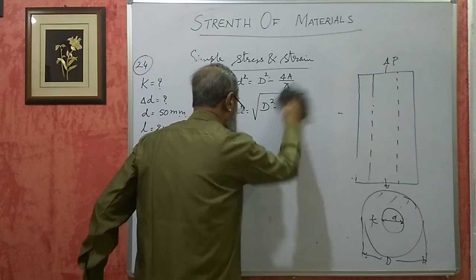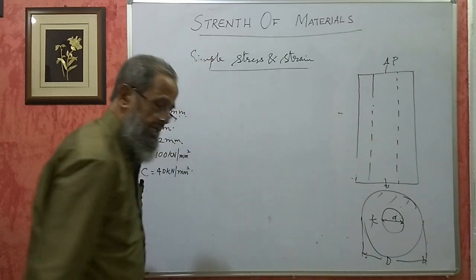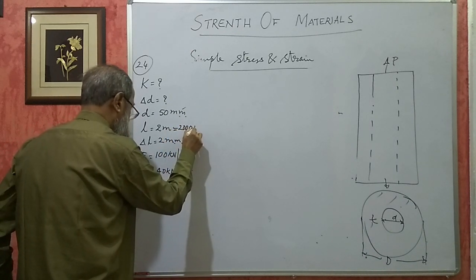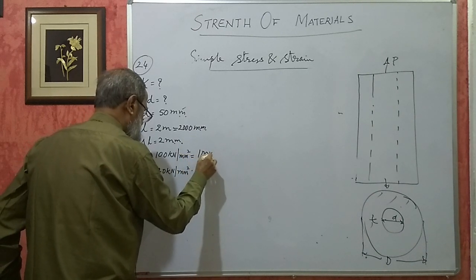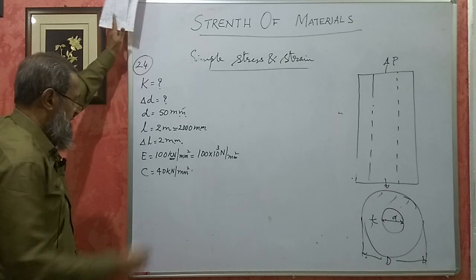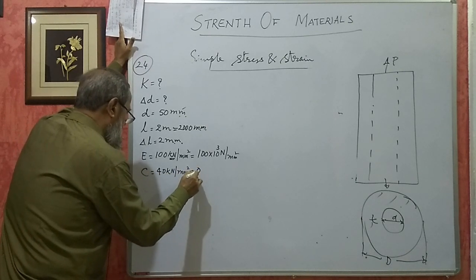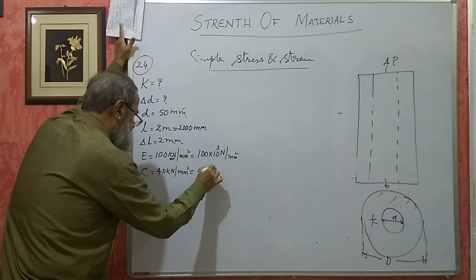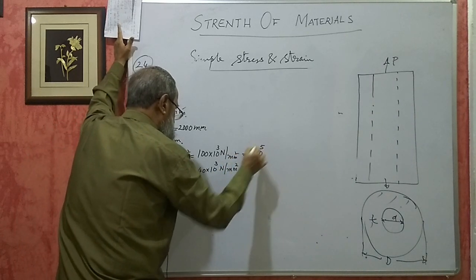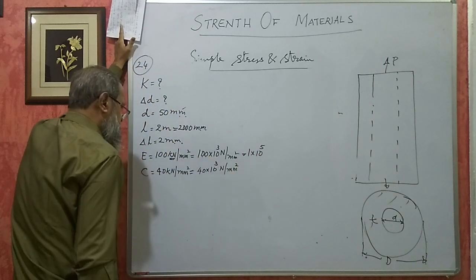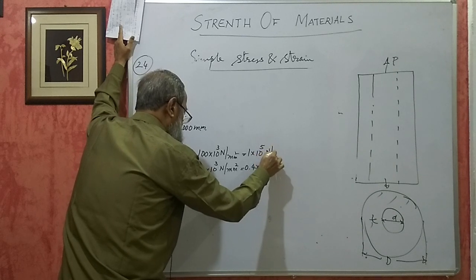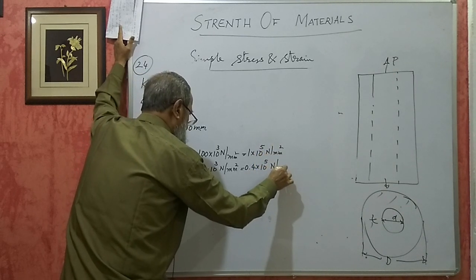We will make a few alterations in units. The diameter is 50 mm, the length becomes 2000 mm. E is 100 into 10 to the power of 3 newton per mm square, which can be written as 1 into 10 to the power of 5 newton per mm square. Similarly G is 40 into 10 to the power of 3, which is 0.4 into 10 to the power of 5 newton per mm square.